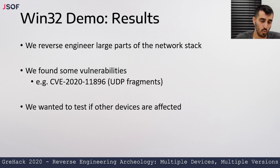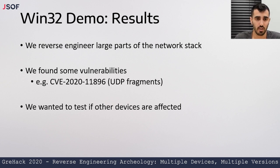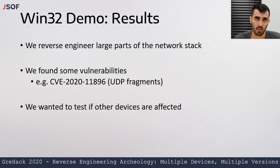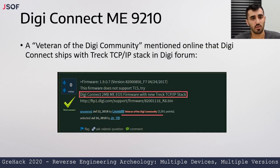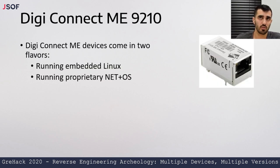We found some vulnerabilities in this stage. One vulnerability was tracked as CVE-2020-11896, which involved an issue with how the Trek stack handles fragments over an IP-in-IP tunnel. We wanted to test if other devices were affected by this serious vulnerability. So we searched online for devices running Trek and found a device from a company named Digi. We found a message on an online forum saying Digi Connect uses the Trek TCP/IP stack. We decided to buy this Digi Connect device.